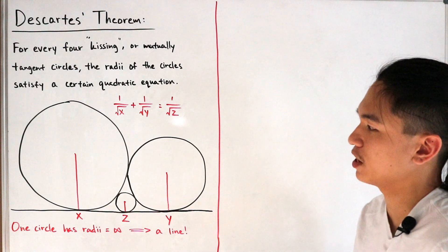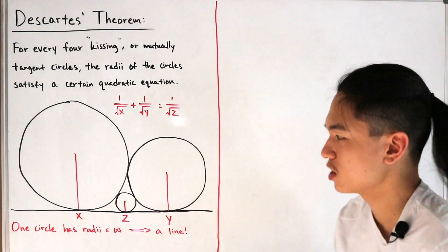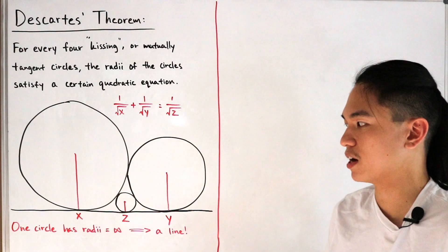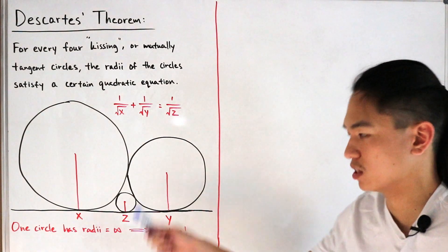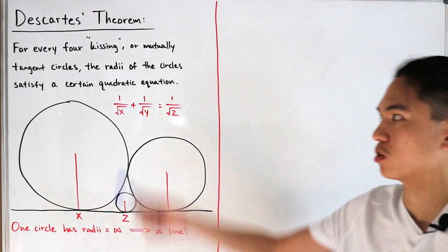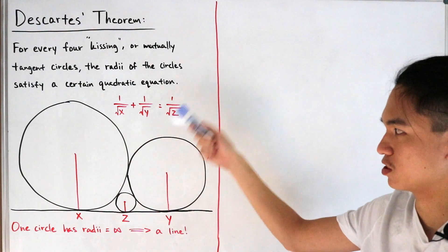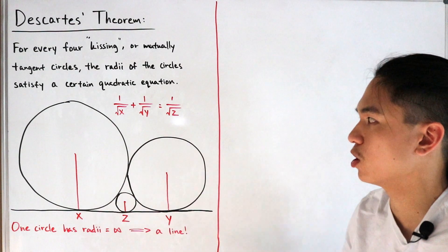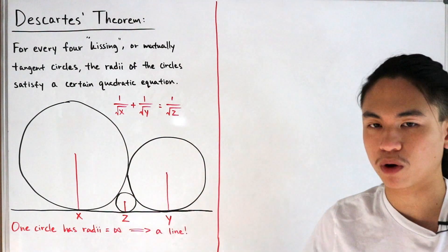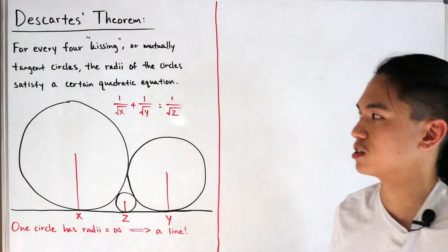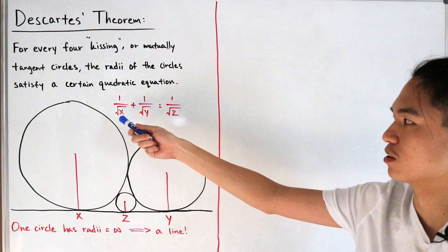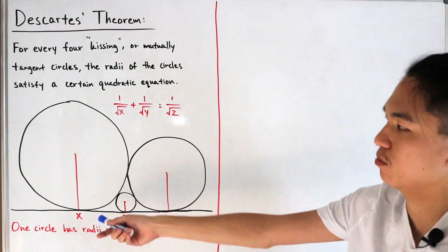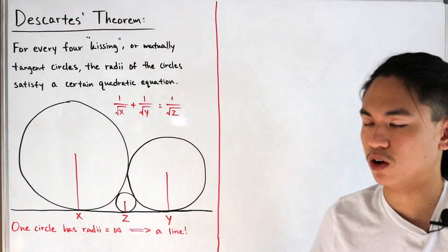Here we actually have a special case. As you notice we see only three circles, but what about this line right over here? As you see in the text, one circle has a radius that's actually equal to infinity, hence this line. This is actually a special case of Descartes' Theorem, with the following equation: one over square root of x plus one over square root of y equals one over square root of z, with these following radii listed below, that actually satisfies the equation whatever your parameter inputs are.